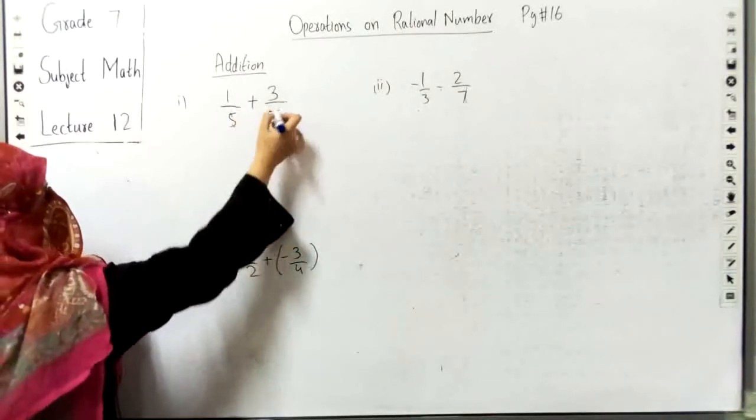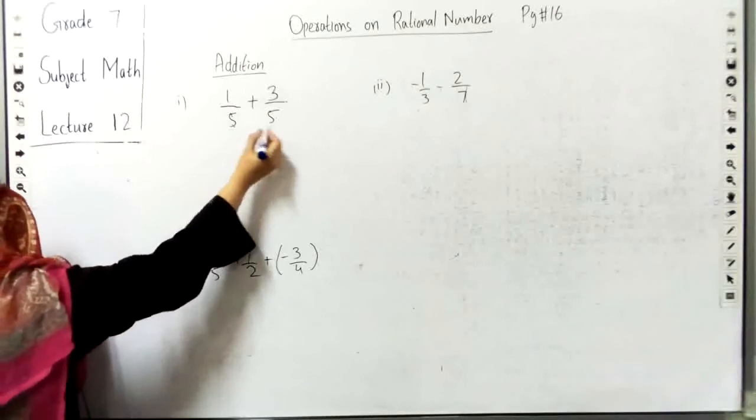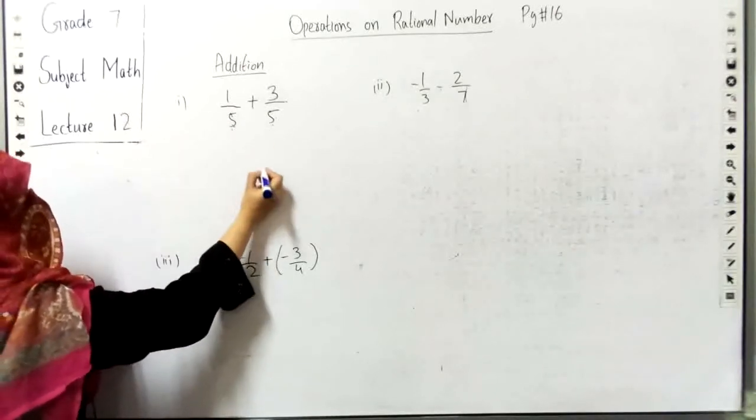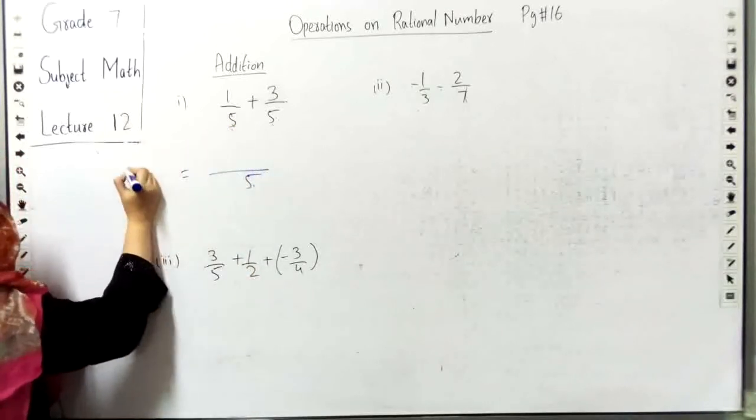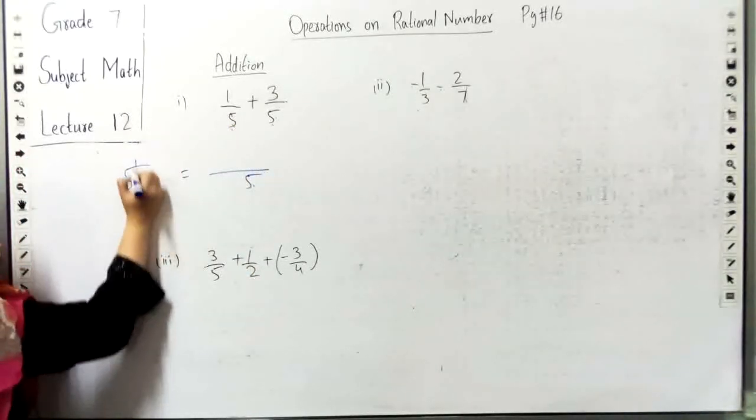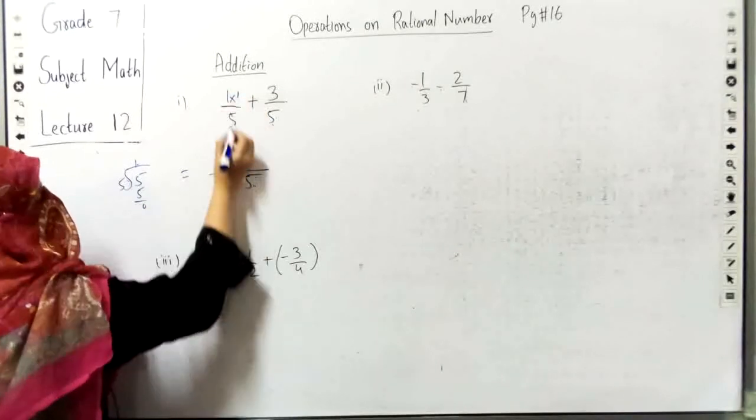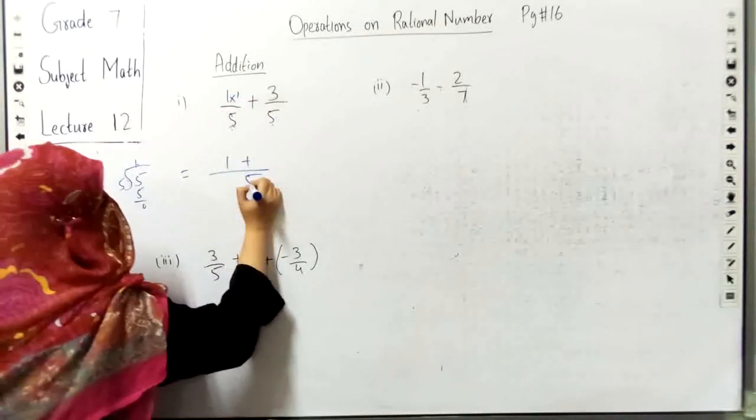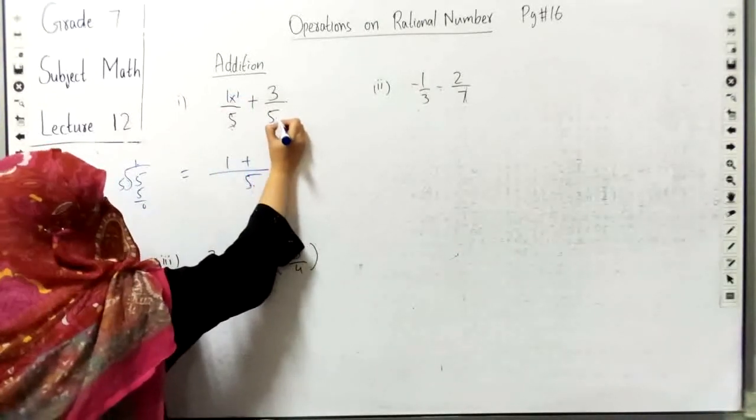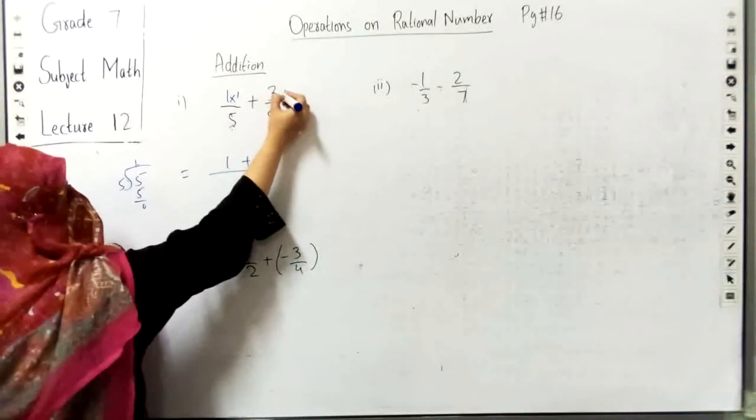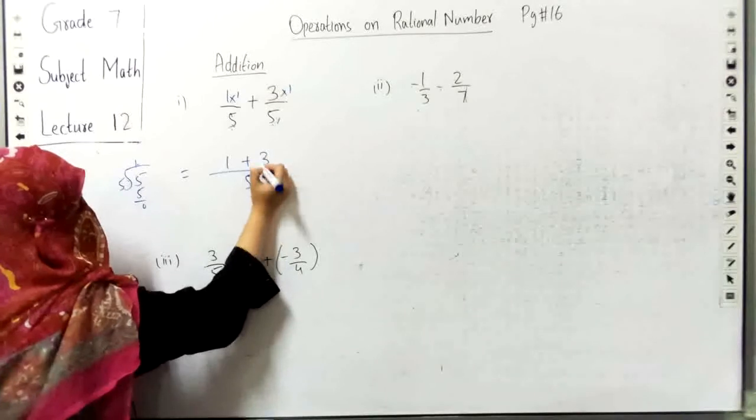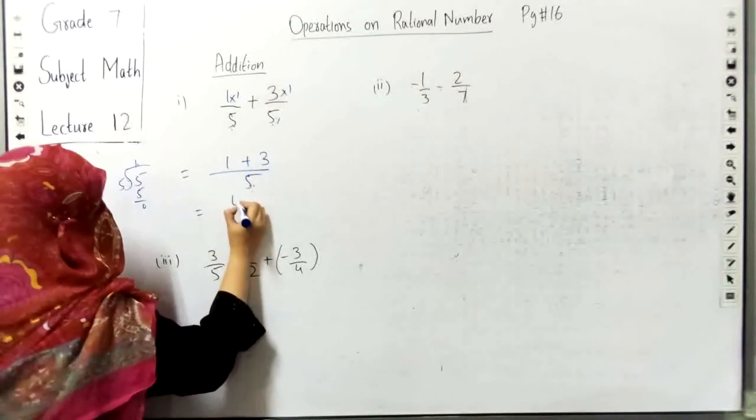So 1 by 5 plus 3 by 5 we will add. We will add 5 to 5, then divide. So 1 plus 3 is equal to 4. 4 by 5 is the answer.